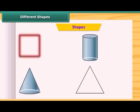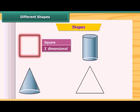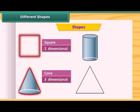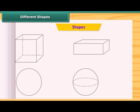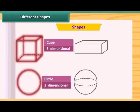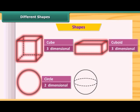This is square and this is two-dimensional. This is a cone and is three-dimensional. This is a cylinder. This is also three-dimensional. This is a triangle and this is two-dimensional. Circle, two-dimensional. This is a cuboid and is three-dimensional. And this is, is it a sphere? Yes, this is a sphere and is three-dimensional.